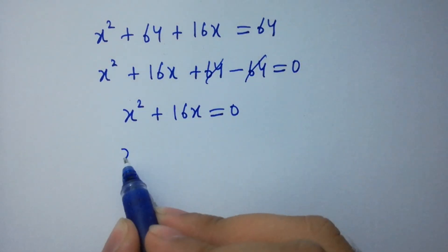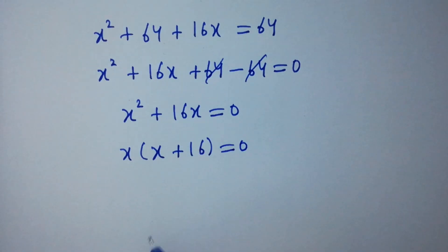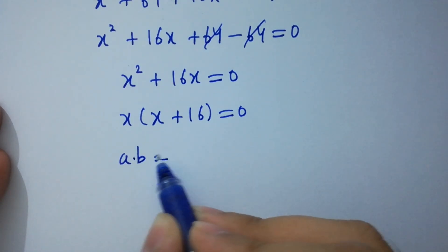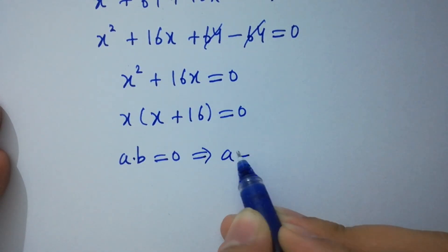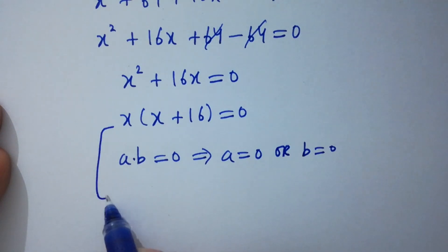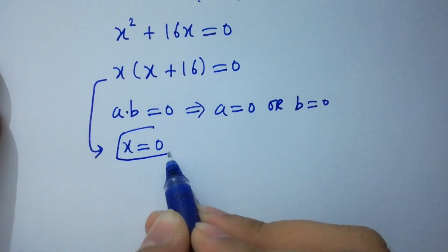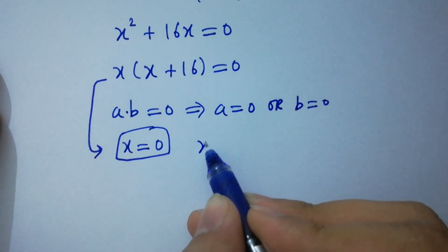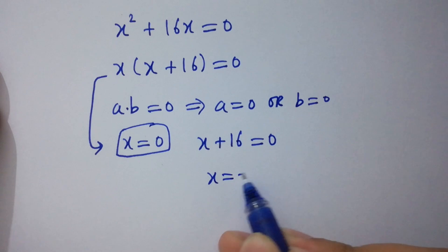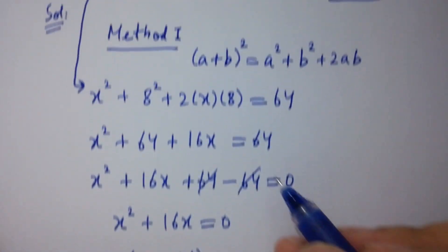Here x can be taken as common, giving x(x + 16) = 0. As we know, if ab = 0, then a = 0 or b = 0. So x = 0, which is one value of x, or x + 16 = 0, giving x = −16, which is also a value of x. This is Method 1.